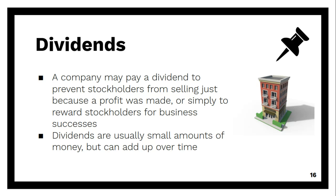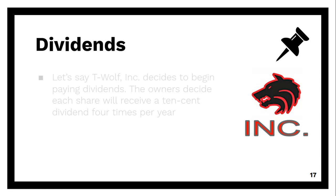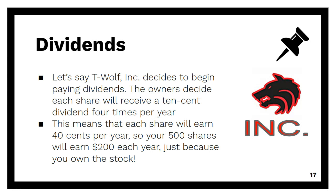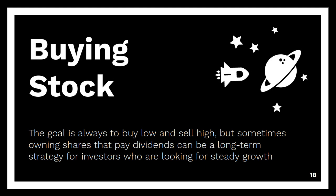Keep in mind that dividends are usually very small amounts of money, but they can add up over time. Let's say T-Wolf Inc. decides to begin paying a dividend. The owners of the company decide that each share will receive a $0.10 dividend four times per year — most companies will pay dividends multiple times throughout each year. This means that each share of T-Wolf Inc. will earn $0.40 per year, so your 500 shares will earn you $200 per year just because you own the stock. If you hold the stock for 20 years, you will make $4,000 just in dividends alone, almost equal to the value of your original investment.